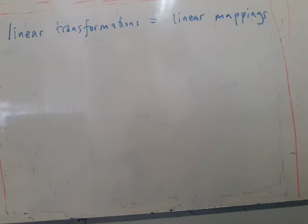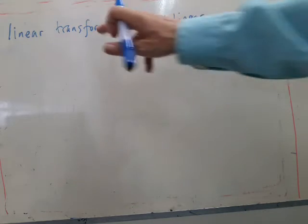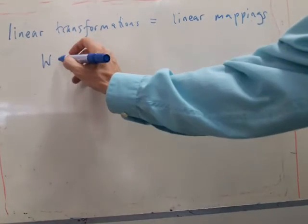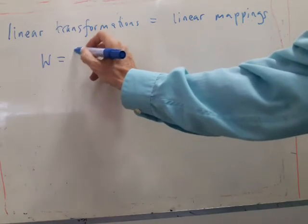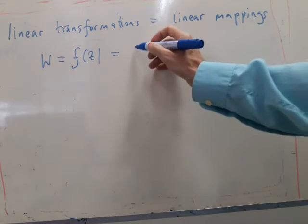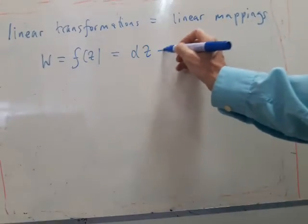So we're now going to tend to call them transformations, but really they're mappings as well. So a linear transformation is a mapping where f of z can be written in the form alpha z plus beta,